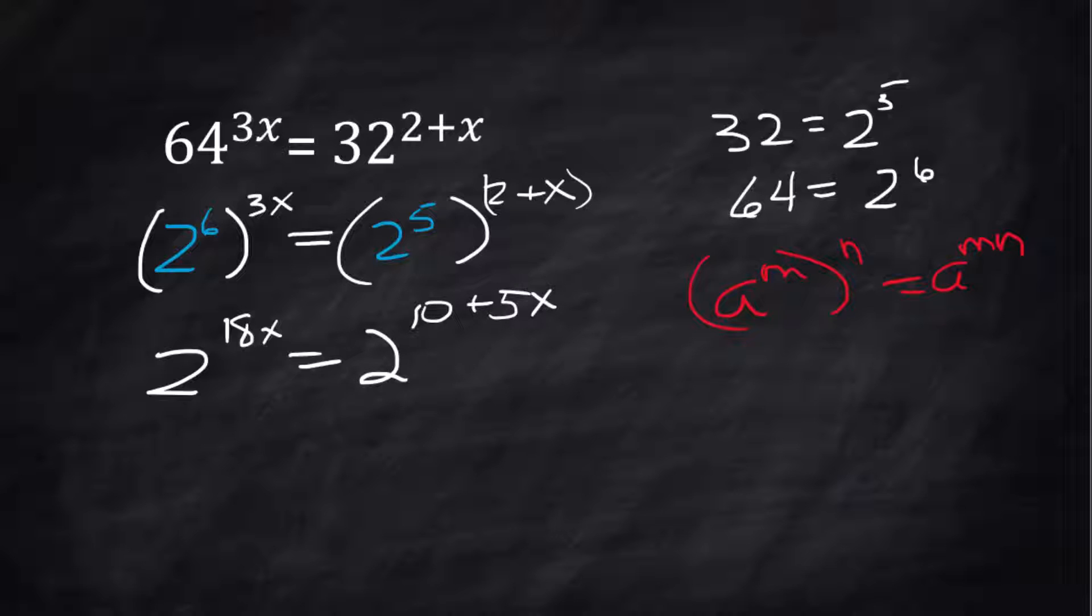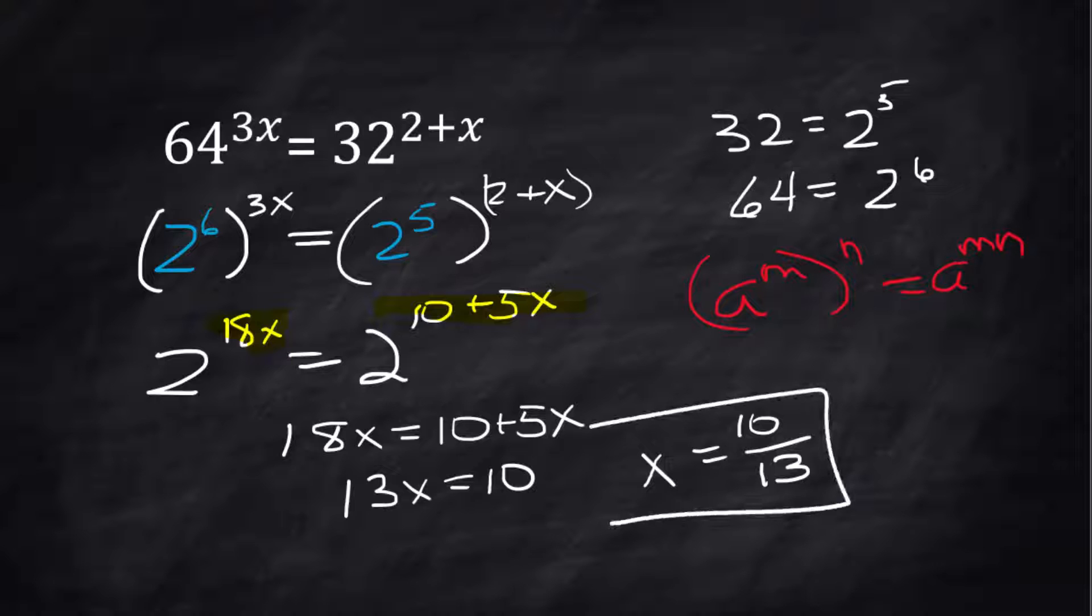Now that they have the same base, the exponents look different, but we know they must be equal. 18x = 10 + 5x. Solve. Take 5x away from both sides, we get 13x = 10. Divide both sides by 13, we get 10/13, and that is the solution.